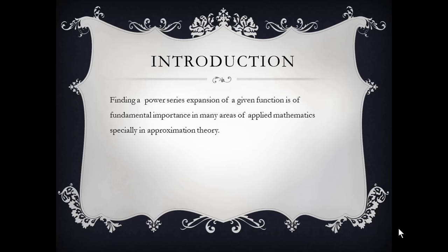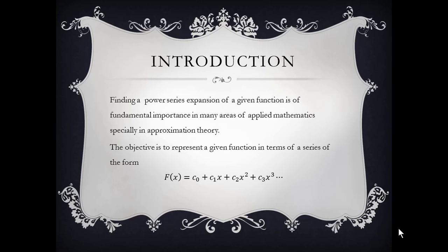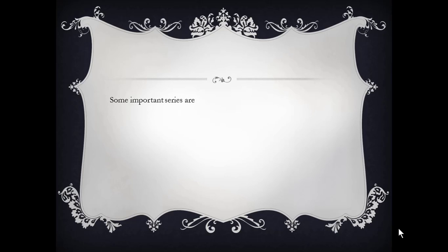The objective in this lecture is to represent a given function in terms of a series of the form f(x) = C0 + C1*x + C2*x² + C3*x³. The objective is to find the constants C0, C1, C2, C3 for some given function F(x).